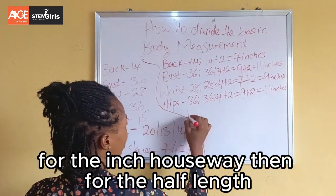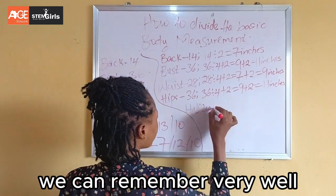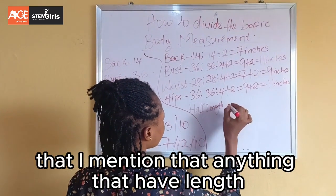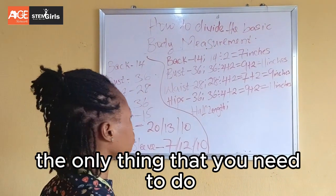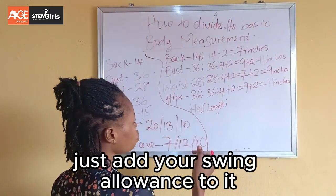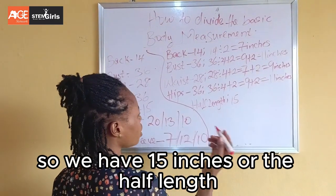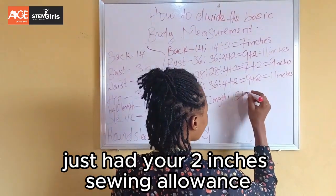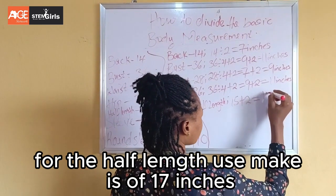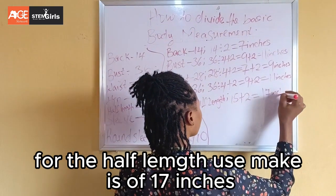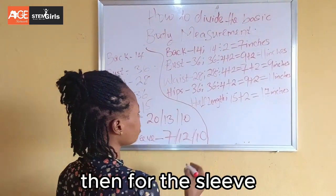For the half length — and I mentioned this before — anything that is a length measurement will not be divided. The only thing you need to do is add your sewing allowance to it. We have 15 inches for the half length, so you just add 2 inches sewing allowance to get 17 inches for cutting.